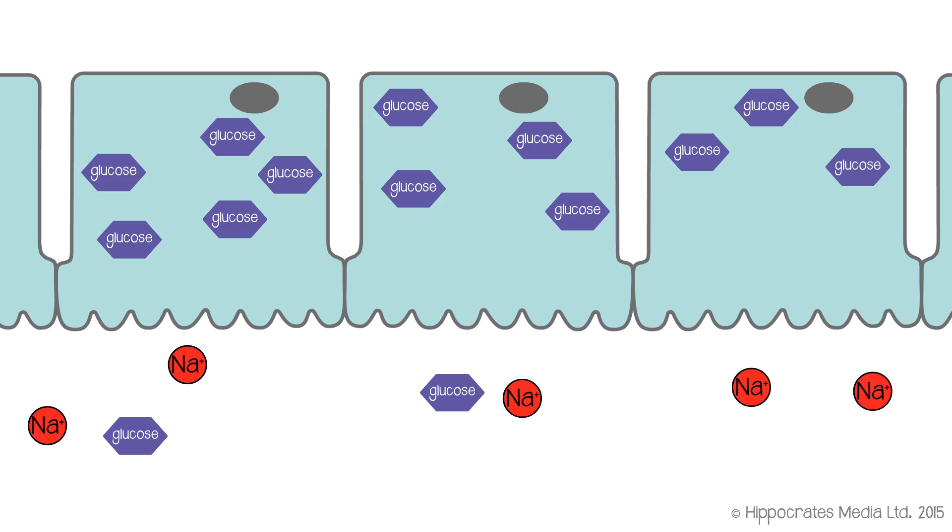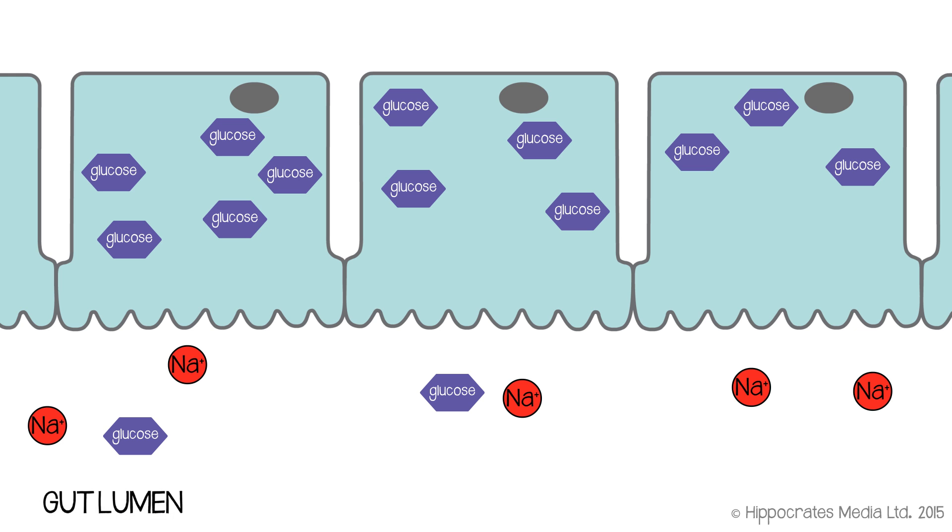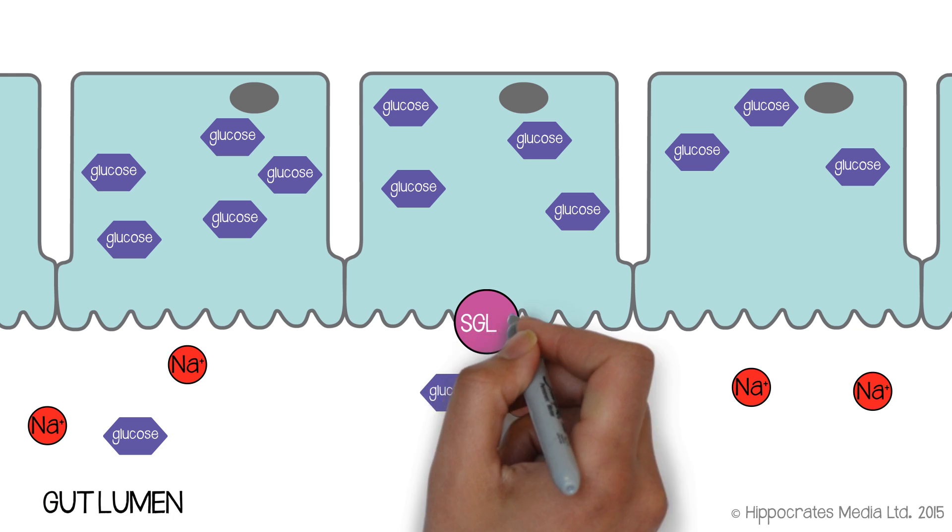Now, it turns out that these transporters exist. We find them, for example, in the small intestine, and they're referred to as SGLT transporters, sodium glucose transporters. Now, what's the point of these things?